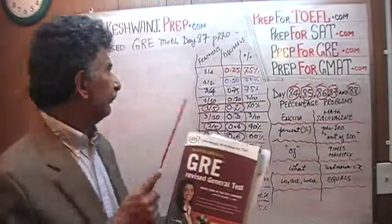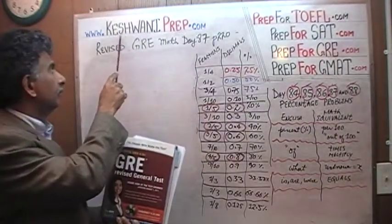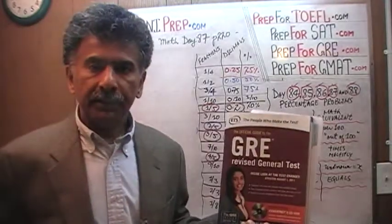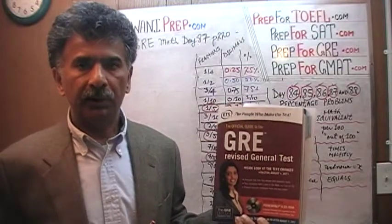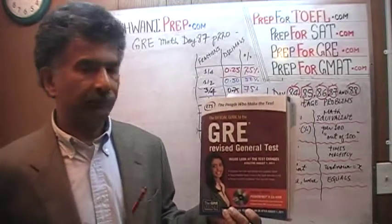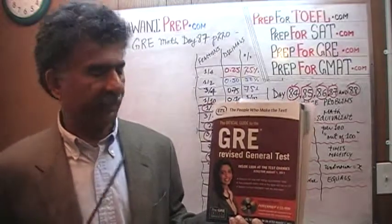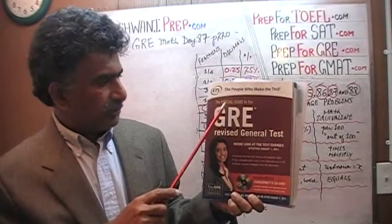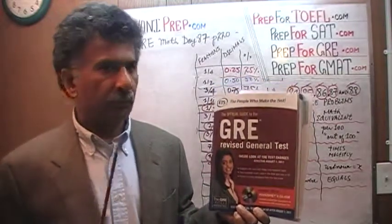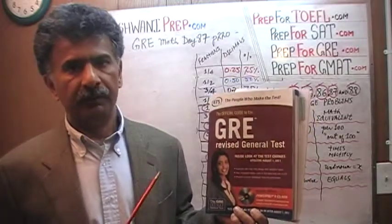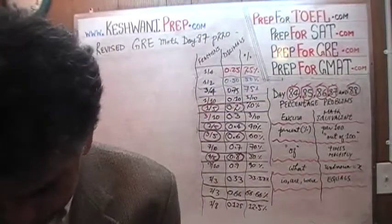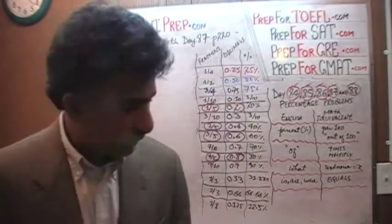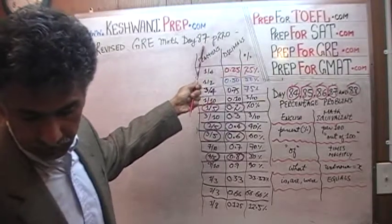Hello, my name is Keshwani — that is K-E-S-H-W-A-N-I. We are here because we want to prepare for the GRE, not the SAT. We have been solving math problems out of this book, the Official Guide to the GRE Revised General Test. If you do not own this book already, purchase one immediately — you are going to need it. The problems we have been solving are on page 220, and today is our lesson number 87.